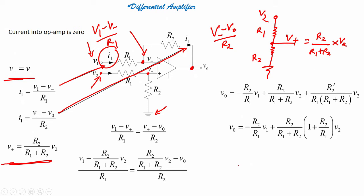Since V minus equals V plus, I will equate both I1 expressions: (V1 minus V minus) divided by R1 equals (V minus minus Vo) divided by R2. If I substitute the value of V plus into this equation — replacing V minus with R2/(R1+R2)×V2 — I get a combined equation to solve for Vo.